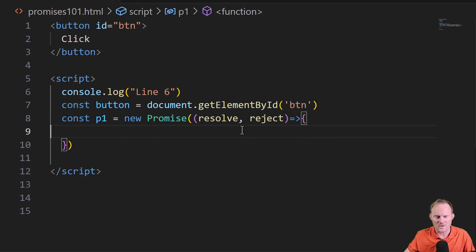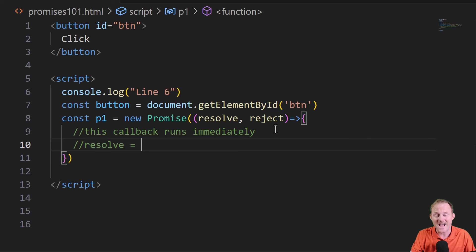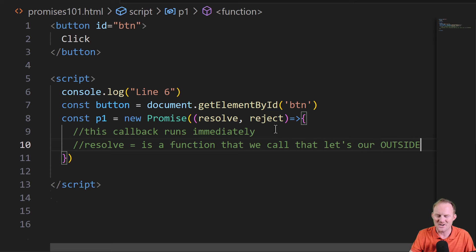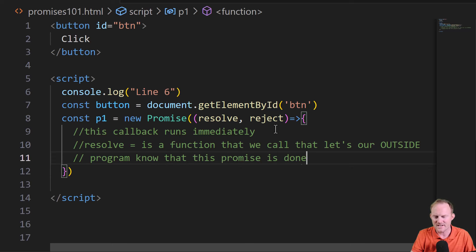So callbacks galore. We'll call the first parameter here, resolve and the second one reject. Let's make a couple notes. This callback here, this callback runs immediately. It's not going to wait. It will run as soon as it gets here. So this code runs right away. Resolve. What is that? Well, it is a function that we call that lets our outside in all caps, because that's what we're going for, program know that this promise is done.